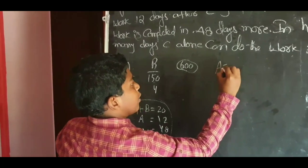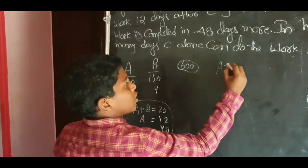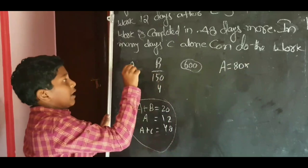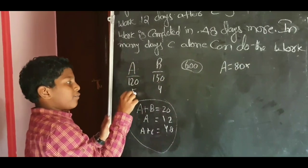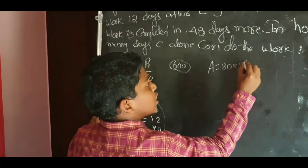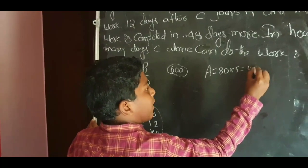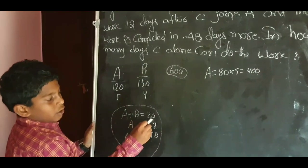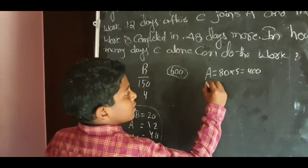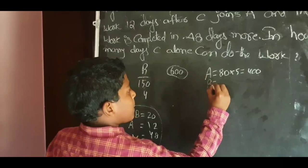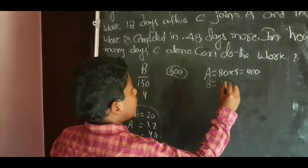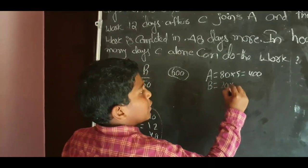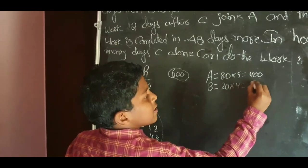Total days A worked is 80 days. A's total contribution is 80 into 5 units per day, which equals 400 units. Now for B: B worked with A for 20 days at 4 units per day, so 20 into 4 equals 80 units.